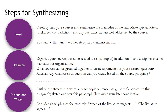The steps for synthesis — I've distilled them into three. First, read. Please don't skip over this — it can be really tempting when you're tired or busy, but you have to read closely and carefully. Then summarize the main idea of the text. Ideally you'd have already engaged in some summary before approaching the synthesis stage. Make special notes of the similarities, contradictions, and any questions that are not addressed by the source — if there's something you wish the source talked about but didn't, that might be a great thing to explore later in your synthesis.